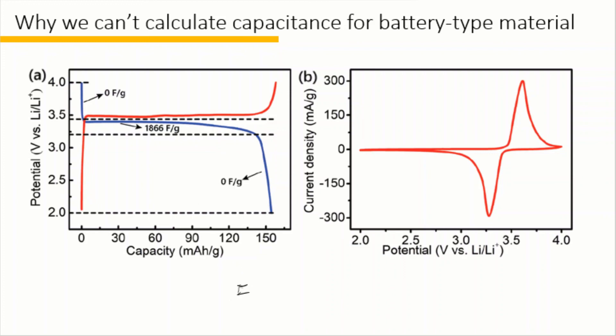We know for a supercapacitor, we calculate the energy based on E equal to 1 over 2 C V squared. The energy density equal to 0.5 multiplied by the capacitance and the square of the voltage. If the capacitance 1866 farads per gram is used to calculate the energy based on this equation, then the energy density can be as high as 1019 watt-hour per kilogram.